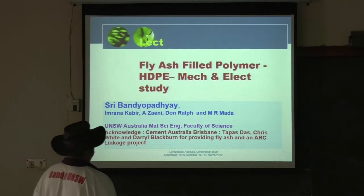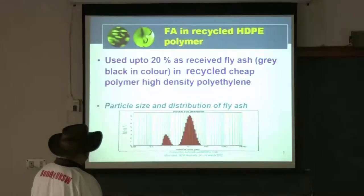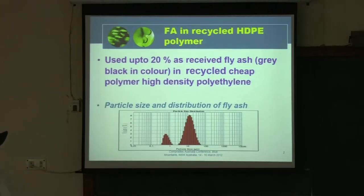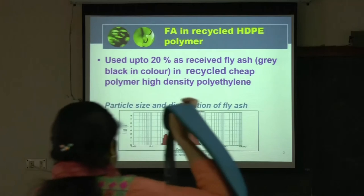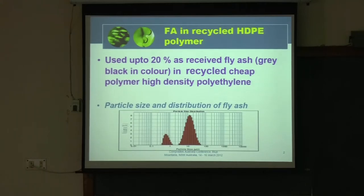We used up to 20 weight percent of as-received fly ash, gray-black in color, combined with recycled cheap polymer — high density polyethylene. This means that rather than throwing away these plastics in the rubbish bin or in the soil, people can break them down and sell them. Just as fly ash is a recycled material, this is recycled polyethylene — so they become friends to each other. We used fly ash given by the Australian company Cement Australia Brisbane.